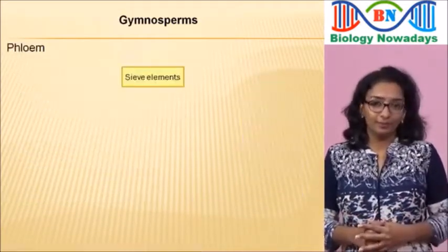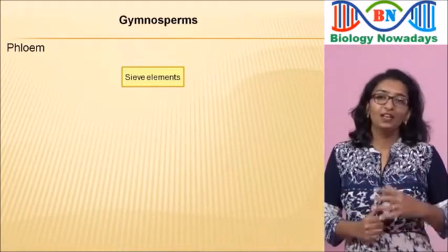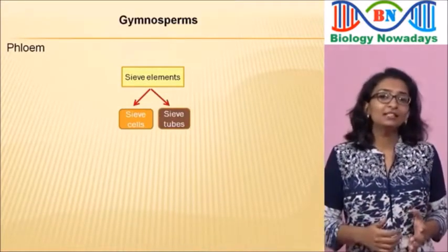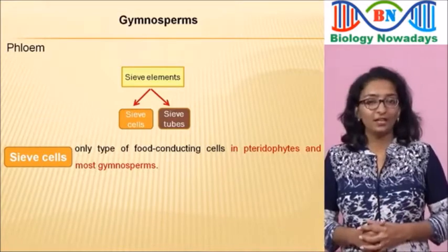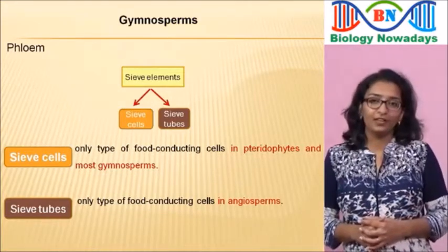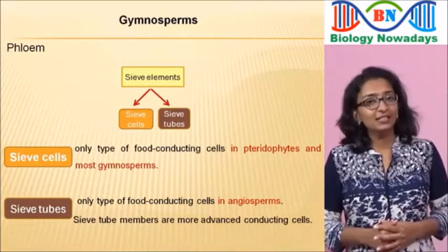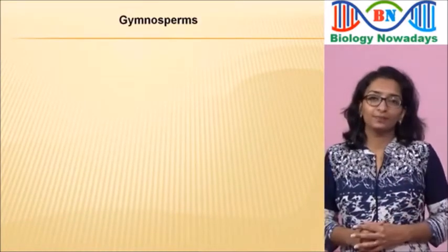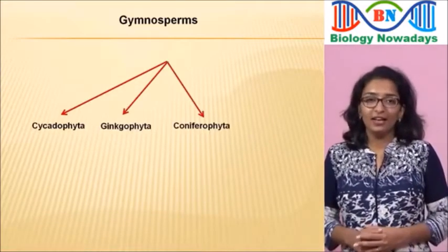Phloem consists of special food-conducting cells called sieve elements, which include sieve cells and sieve tube members. Sieve cells are the only type of food-conducting cells in gymnosperms, while sieve tube members are more advanced. The gymnosperms include four divisions: Cycadophyta, Ginkgophyta, Coniferophyta, and Gnetophyta.